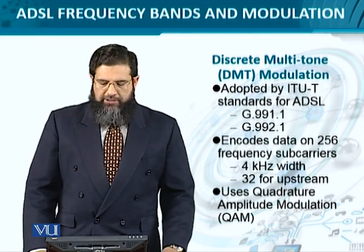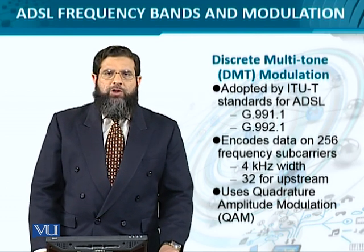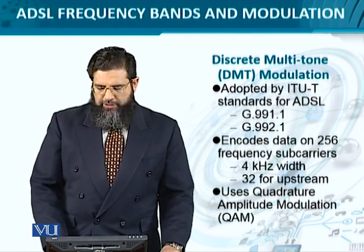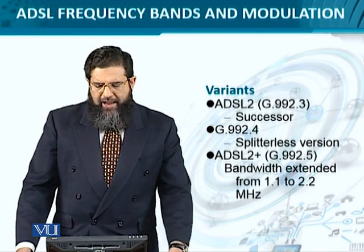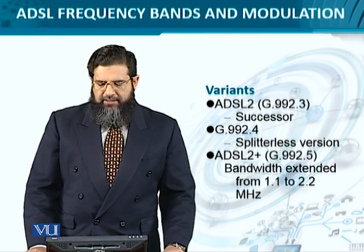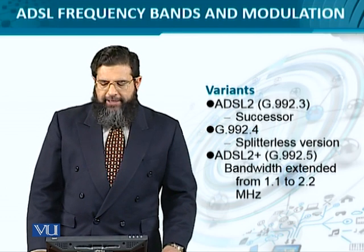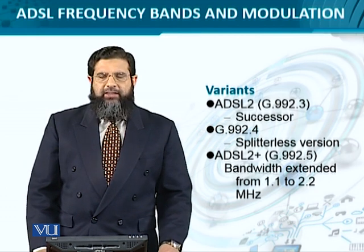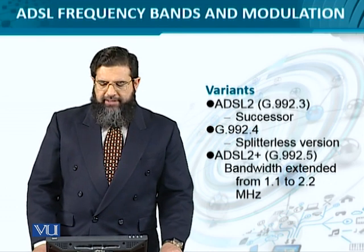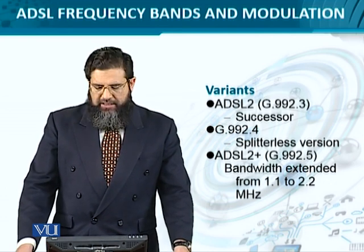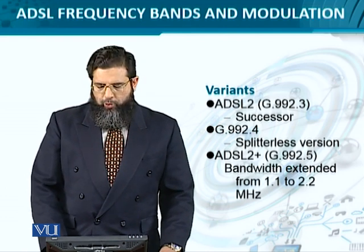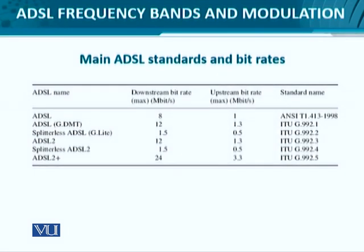The DMT sub-carriers are modulated using QAM — Quadrature Amplitude Modulation — utilizing the in-phase (I) and quadrature (Q) components. Regarding ADSL variants: ADSL2 (G.992.3) is the successor to ADSL, and its splitterless version is G.992.4, where the splitter is removed entirely. ADSL2 Plus extends the bandwidth from 1.1 to 2.2 MHz.